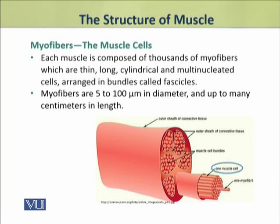These cells in a muscle are arranged in groups or bundles which are called fascicles. Each muscle cell or myofiber is about 5 to 100 micrometers in diameter and may be many centimeters long.